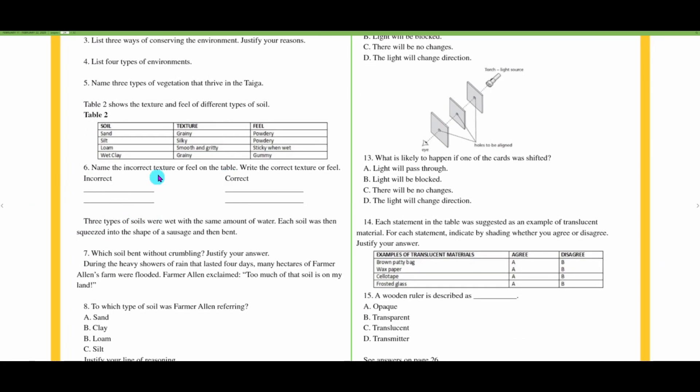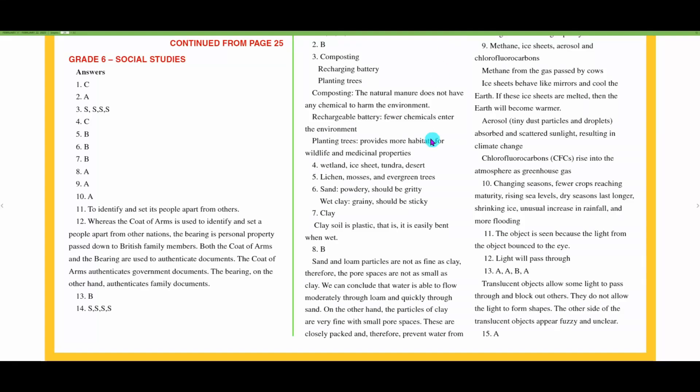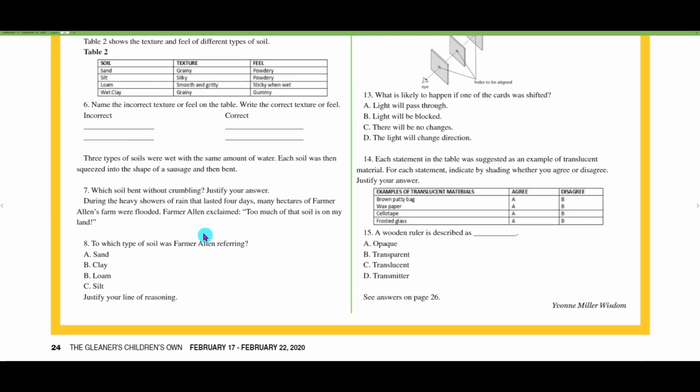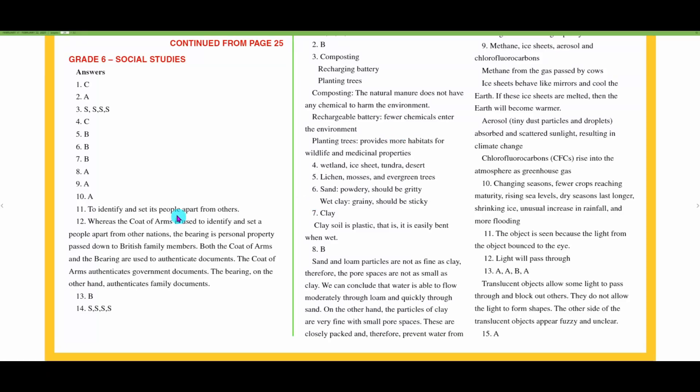Number six was the one with the texture of the soil. They say that sand is powdery when it should be gritty, true. And wet clay is grainy when it should be sticky, that's also correct. Number seven: what type of soil bends without crumbling? We had said clay. They say clay is plastic, that is, it is easily bent when wet.